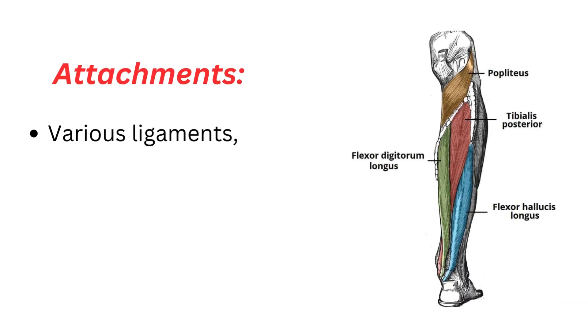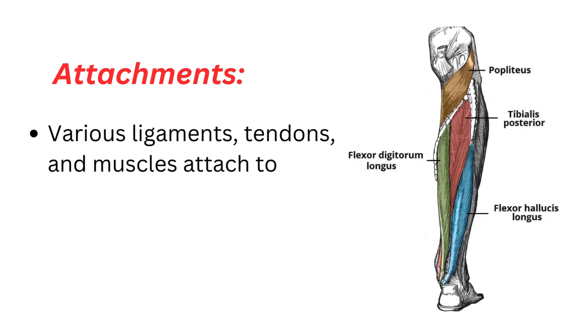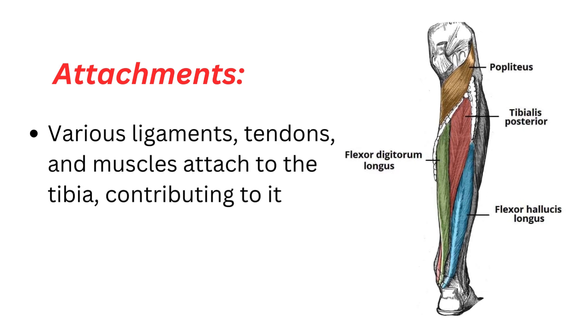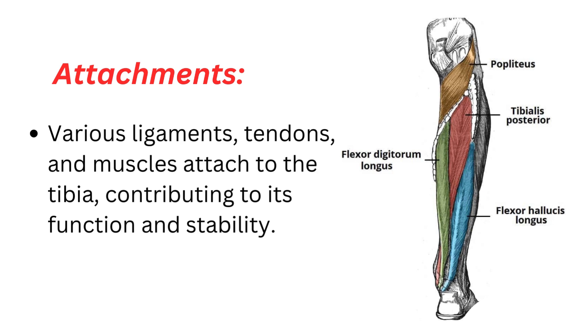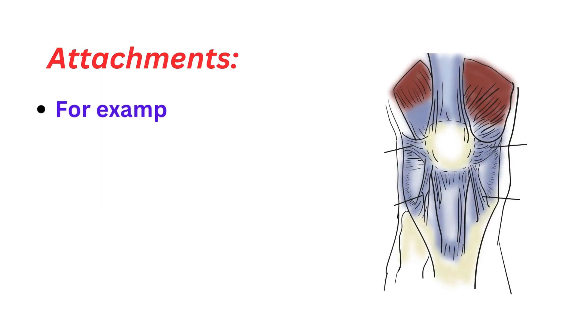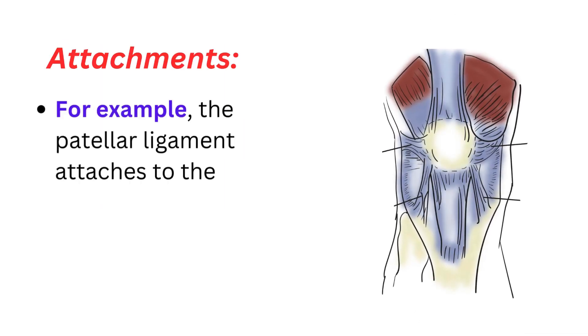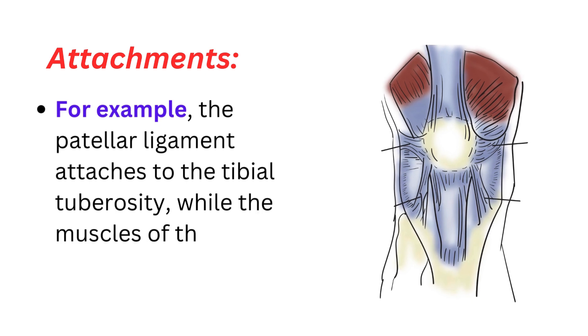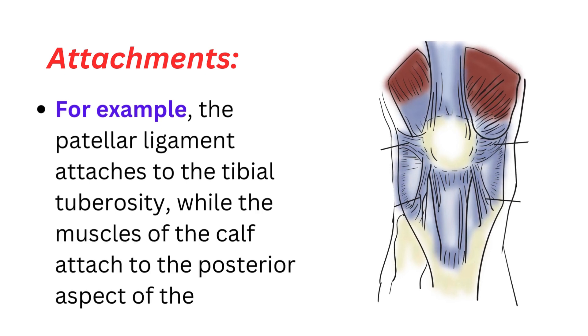Attachments: Various ligaments, tendons, and muscles attach to the tibia, contributing to its function and stability. For example, the patellar ligament attaches to the tibial tuberosity, while the muscles of the calf attach to the posterior aspect of the bone.